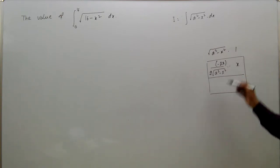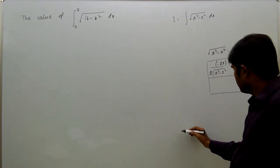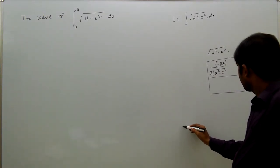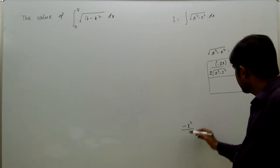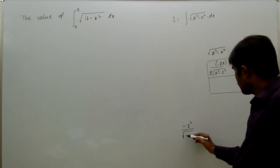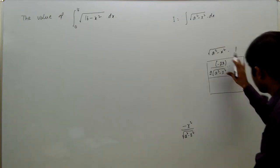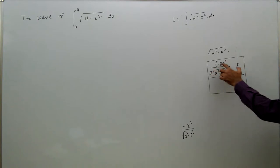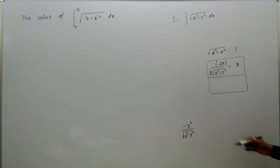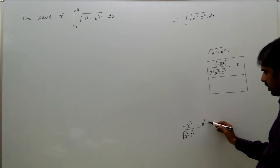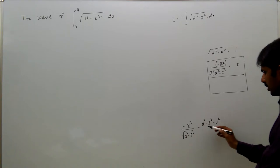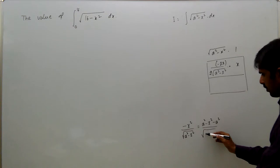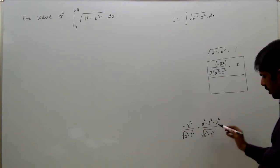This can be modified as: the x terms give x into x which equals x squared. The 2s cancel, giving minus x squared by square root of a squared minus x squared. This can be written as a squared minus x squared minus a squared, all over root of a squared minus x squared.